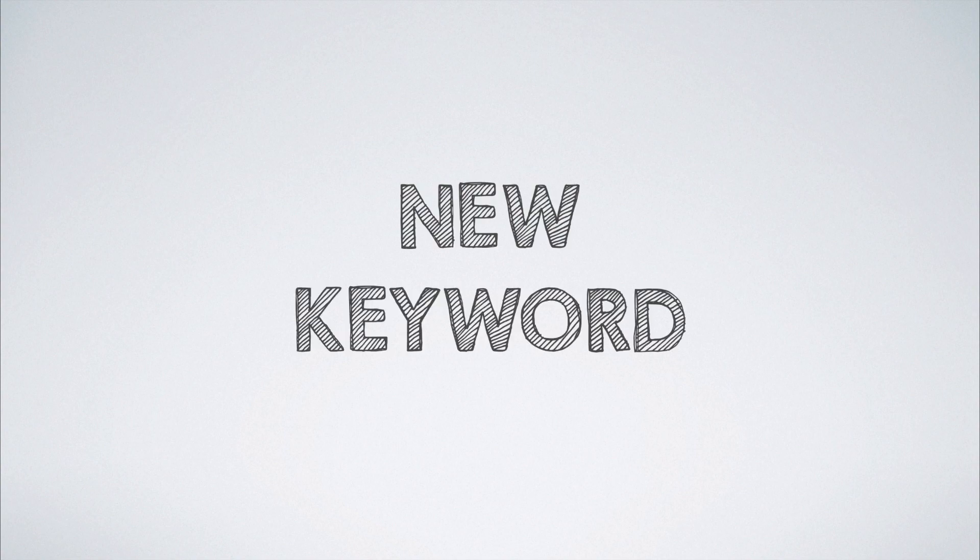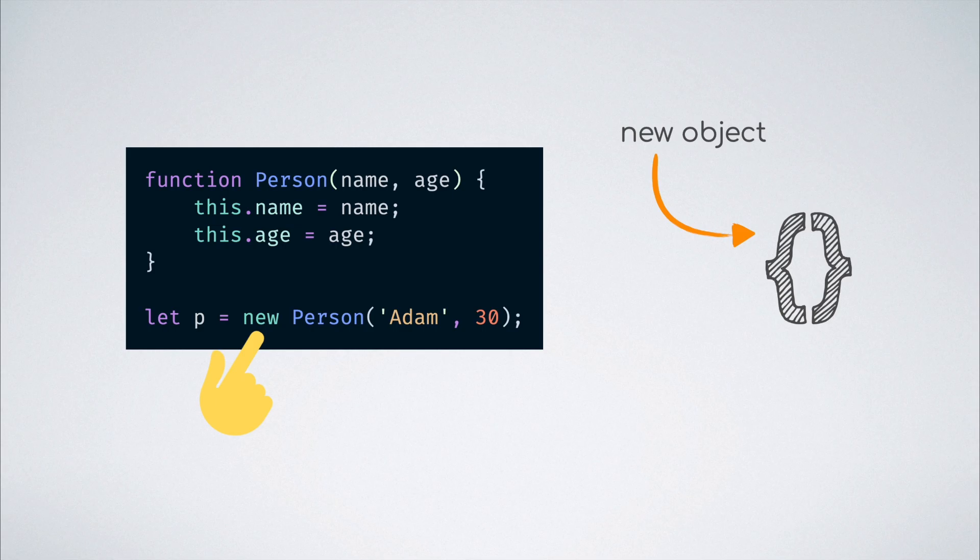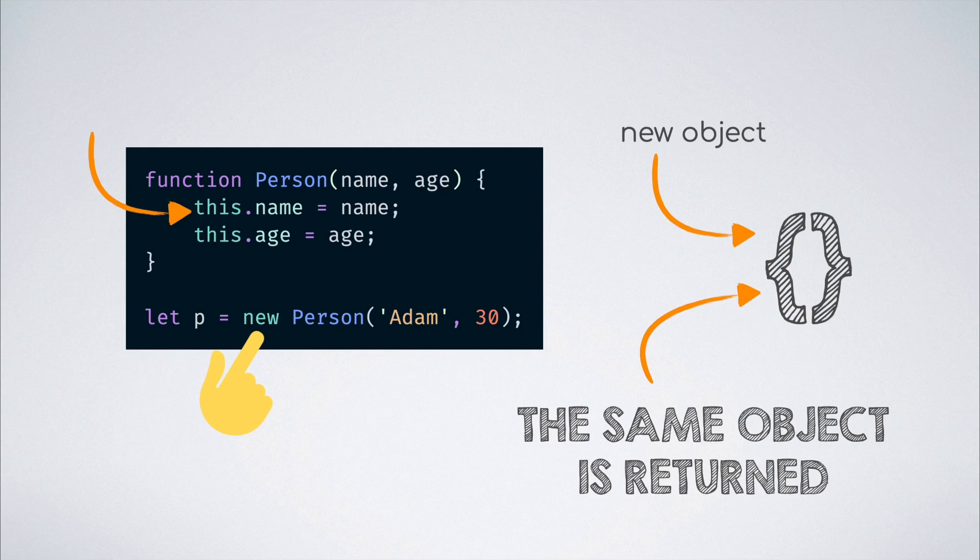The new keyword also modifies the value of this keyword inside of a function. Placing the new keyword in front of a function, which implies using the function as a constructor, changes the behavior of the this keyword inside of that function. This initially points to a new object that is created on the function invocation. All the properties are set on that object, and this is the object that is returned when the function completes its execution even if nothing is explicitly returned from the function.